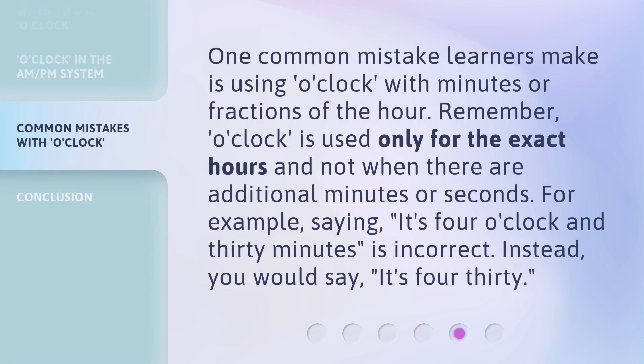One common mistake learners make is using o'clock with minutes or fractions of the hour. Remember, o'clock is used only for the exact hours and not when there are additional minutes or seconds. For example, saying 'it's 4 o'clock and 30 minutes' is incorrect. Instead, you would say: it's 4:30.